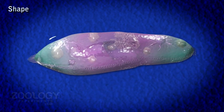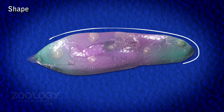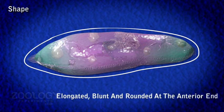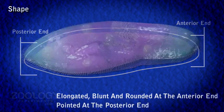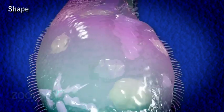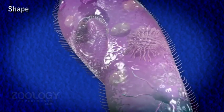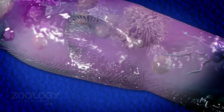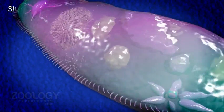Shape: Paramecium is often described as slipper-shaped. Its shape is usually constant and in general asymmetrical. Paramecium caudatum — meaning slipper-shaped animal — has a body that is elongated, blunt and rounded at the anterior end, and somewhat pointed at the posterior end. It is circular with the greatest diameter behind the center of the body. The anterior half is slightly twisted, and the body is distinguished into an oral or ventral surface and an aboral or dorsal surface.